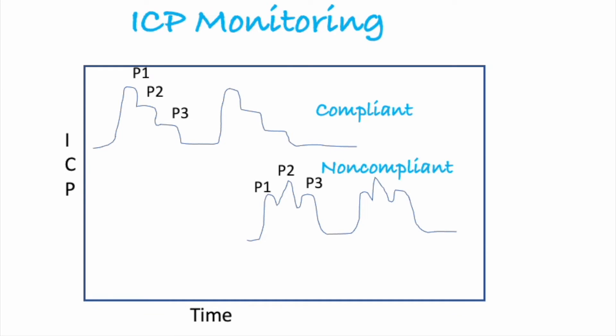A non-compliant waveform looks kind of like a crown, where P2 is much higher than both P1 and P3, and that's more what we're going to see with swelling.